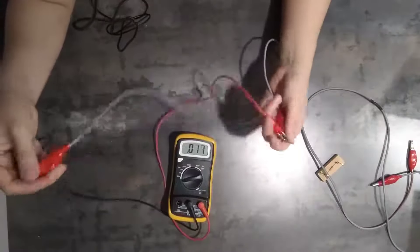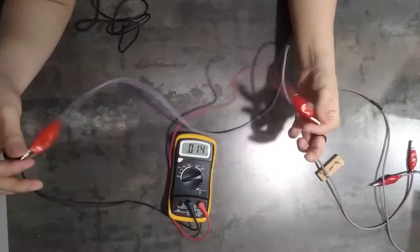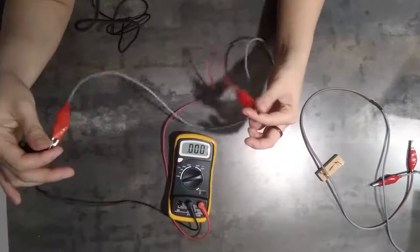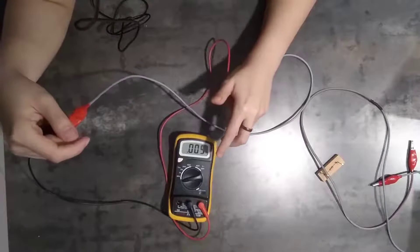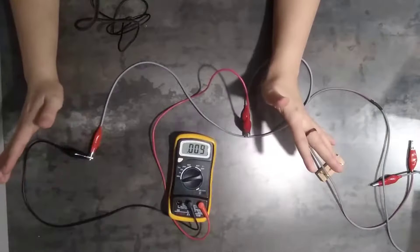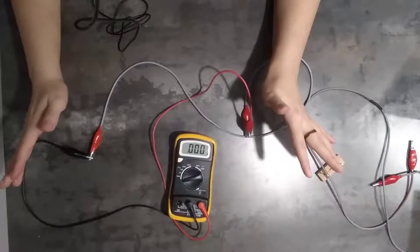And then you notice, again, if I fiddle a bit with the leads like this, play around with it a bit, this one can actually change. So it's important for you to, once you connect the circuit, you just let it go and let it stabilize. It should drop back to 0.